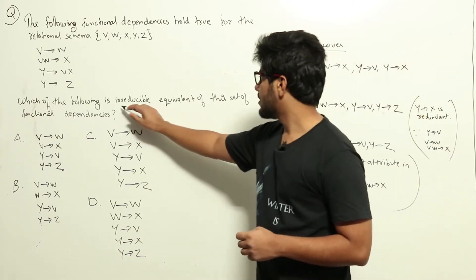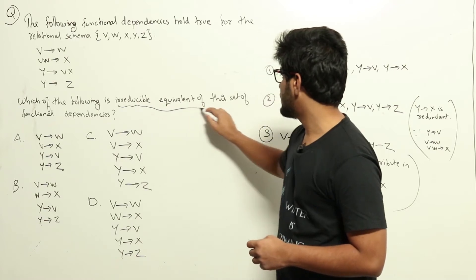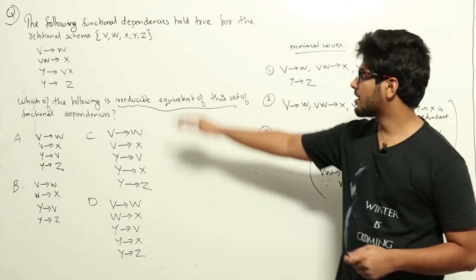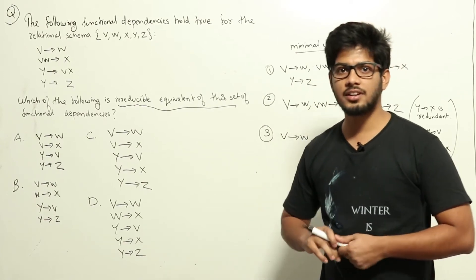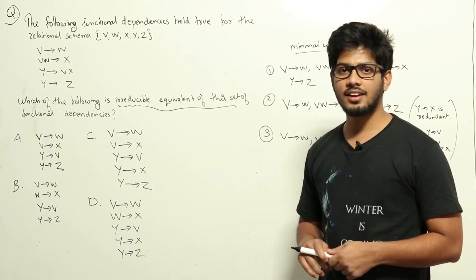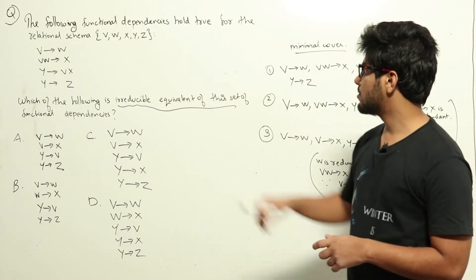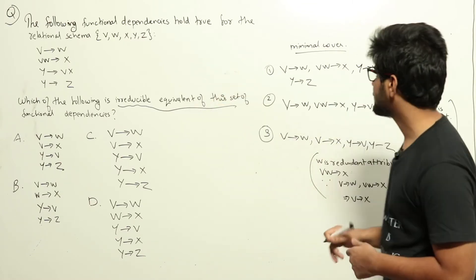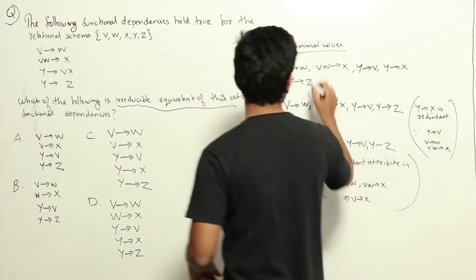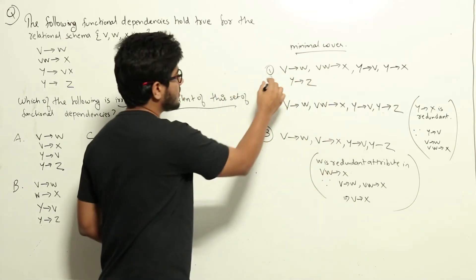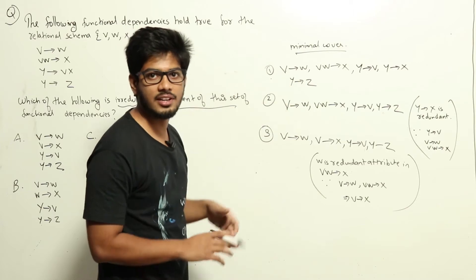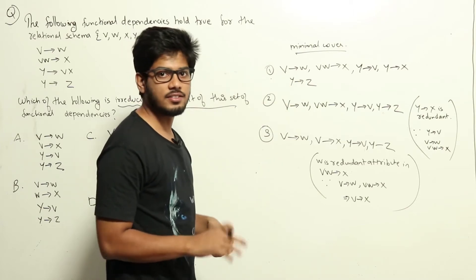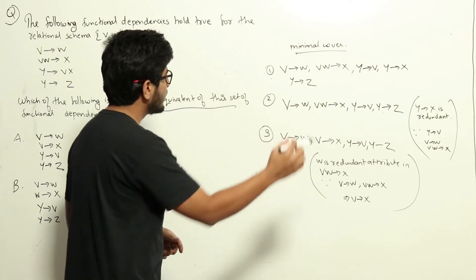The question is asking for the irreducible equivalent of this set, meaning the minimal cover of these functional dependencies. How to find the minimal cover is explained clearly in the video lectures. For this question, I will show you how to do it. First, to find the minimal cover, we need to write each functional dependency such that the right-hand side has only one attribute.